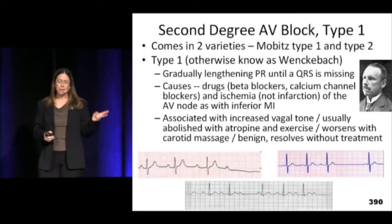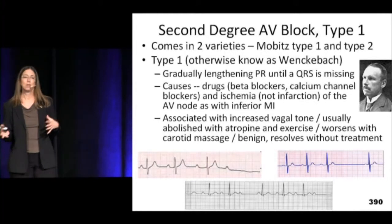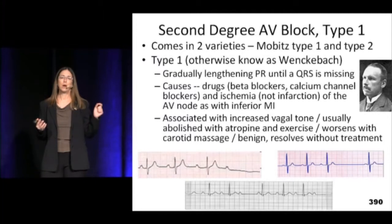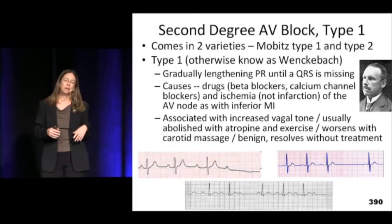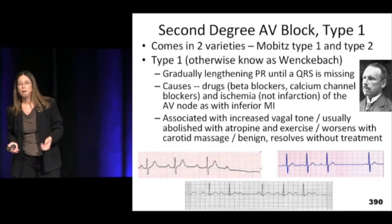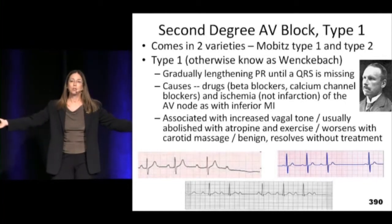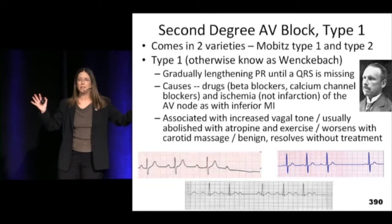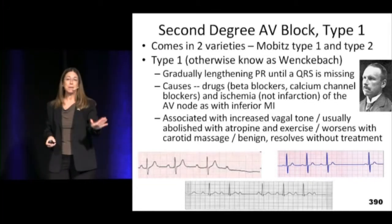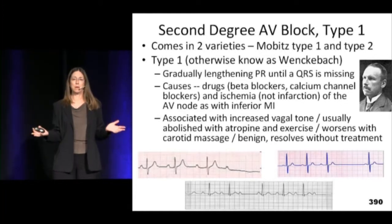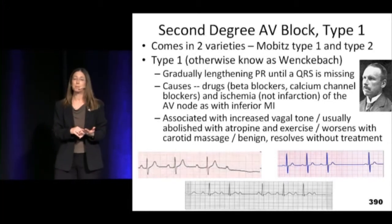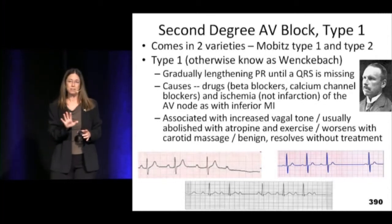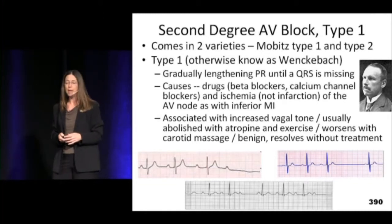Second degree AV block comes in two versions: Mobitz 1 and Mobitz 2. Mobitz 1, which is second degree AV block type 1, also called Wenckebach, is where I think of the PR interval as getting tired. The PR interval gets longer and longer and longer, and then eventually the P just does its thing and the QRS doesn't respond anymore. Drugs are a big factor, but it's also a sign of some cardiac pathology. People often don't have symptoms. It's not considered a scary rhythm, tends to reverse itself over time, and is often seen with vagal tone.